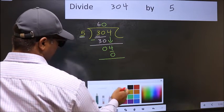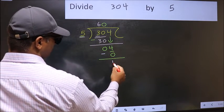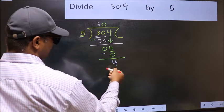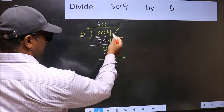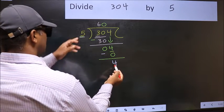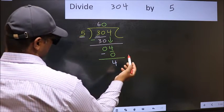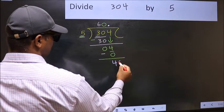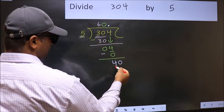Now you should subtract. 4 minus 0, 4. Over here, we did not bring any number down, and 4 is smaller than 5. So now you can put dot and take 0. So, 40.